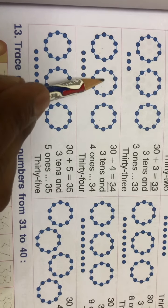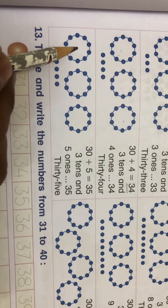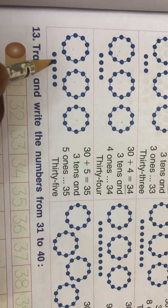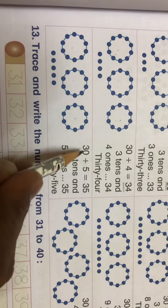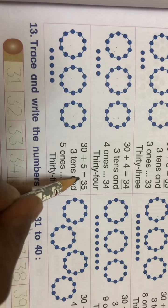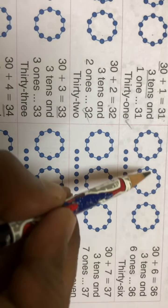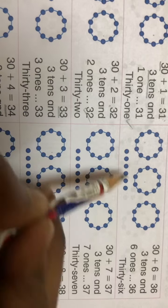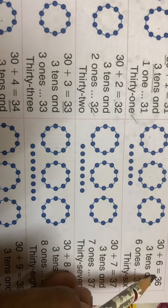Same way, if there are three tenths and five ones, it will make 35. Then see next - if there are three tenths and six ones, it will make 36.